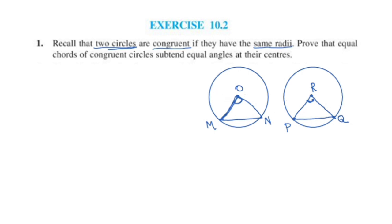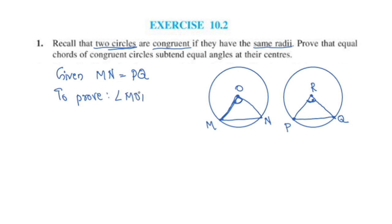We are given that MN and PQ are equal chords. Given MN is equal to PQ. We have to prove the angles — to prove that angle MON is equal to angle PRQ.